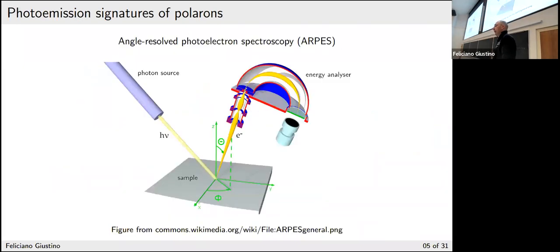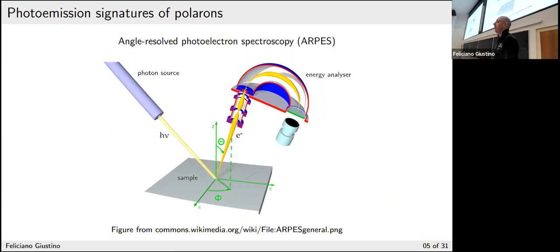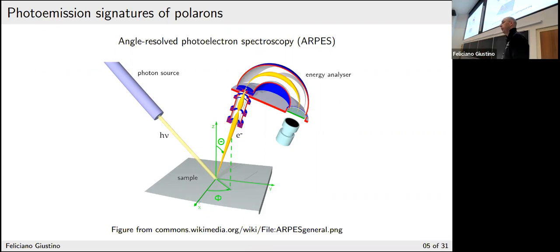Before going there, let me go back maybe 10 years and explain why people have been interested in polarons recently. The polaron concept has been around for almost 100 years — there are many studies, many models, many measurements in the 60s, 70s, 80s. Then interest in those things declined. But in the past 10 years, there have been very refined and elegant photoelectron spectroscopic experiments where people suggested they have identified polarons — really seeing direct signatures of polarons — and these have sparked new interest in this kind of physics.